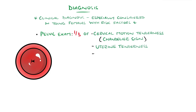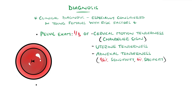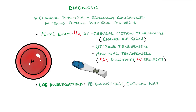Another criterion is uterine tenderness or adnexal tenderness, which was found to have a sensitivity of 96% but a low specificity of 4%. Lab investigations include a pregnancy test to rule out ectopic pregnancy, cervical swabs for nucleic acid amplification testing for chlamydia and gonorrhea, and a wet mount of vaginal secretions looking for polymorphonuclear vaginal cells indicating vaginal infection. Absence of these has a 94.5% negative predictive value.